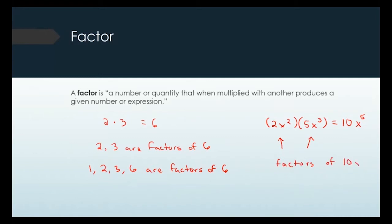It's a lot harder when you have variables to list all possible factors. We usually only list all factors when it's a plain number. With variables, there are too many combinations of the number and the variable to list them all.